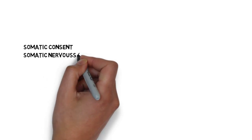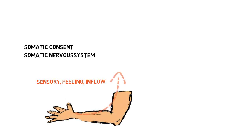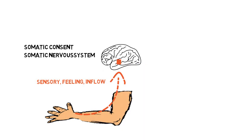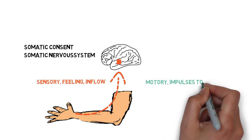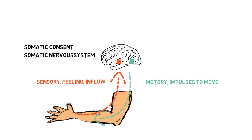Somatic consent is also about the function of the somatic nervous system. The somatic nervous system is divided into two parts: the sensory division, that governs the inflow of information from our skin and sends impulses to the brain enabling us to notice what we feel, and the motor division, that controls our action by sending impulses from the brain to our muscles, allowing us to act and move. This is a neurological foundation for touch and connection.